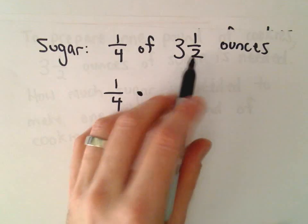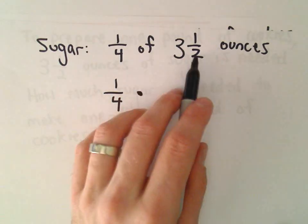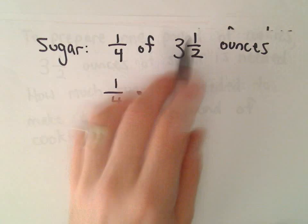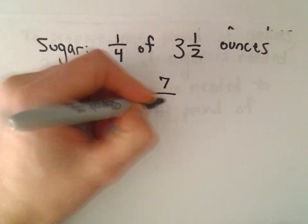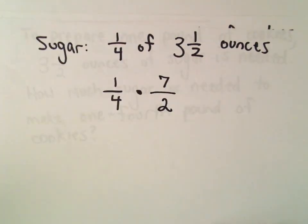So one quarter. So again, we've seen how to make mixed numbers into fractions. So three times two is six, plus one is seven over two. We leave the same denominator.